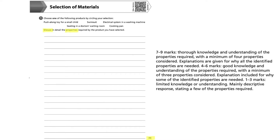We can see that the command word is 'discuss', which means to set out reasons that consider different perspectives in a balanced manner. We are being asked specifically to discuss the properties for the product we have selected. On my screen, I have put up the mark scheme so you can understand how marks are allocated. To achieve full marks, we must demonstrate thorough knowledge and understanding, consider a minimum of four properties, and explain each one.